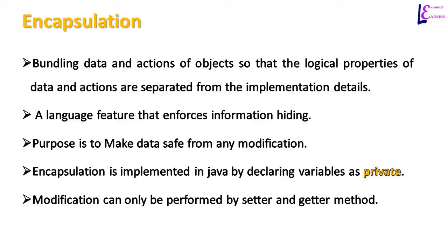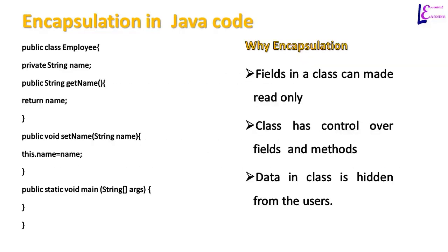To safely access and change the values of variables, setter and getter methods are used. In the code to the right, class Employee has a private variable name. Whenever an object of this class is created, we have getName and setName methods to get and set the name of the employee.